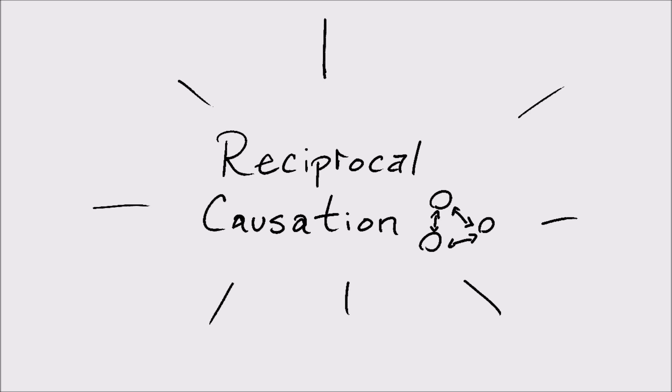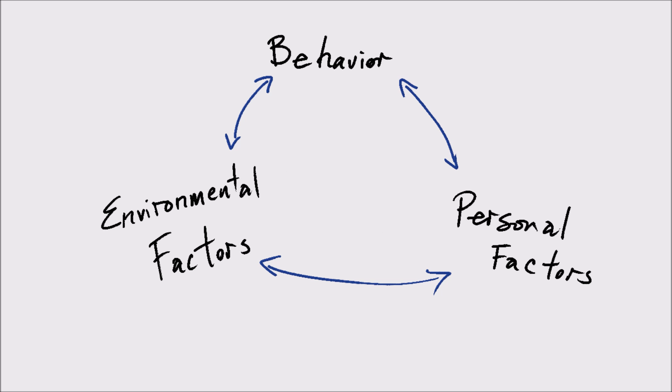Reciprocal causation is a phenomenon described by social cognitive theories. This concept describes how environmental factors like reinforcement or teacher scaffolding can have effects on personal factors such as self-efficacy or self-determination.